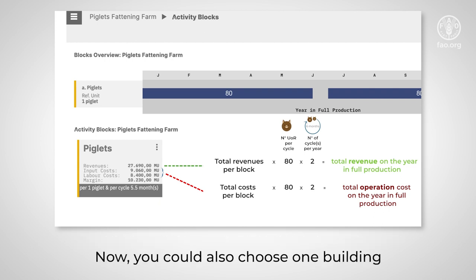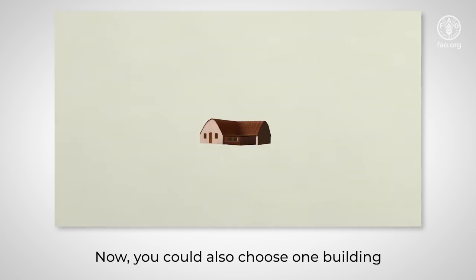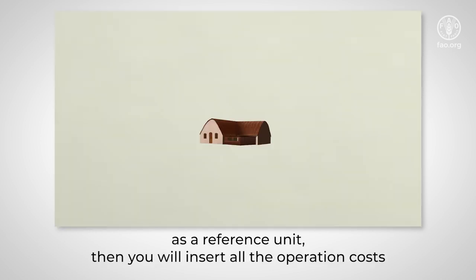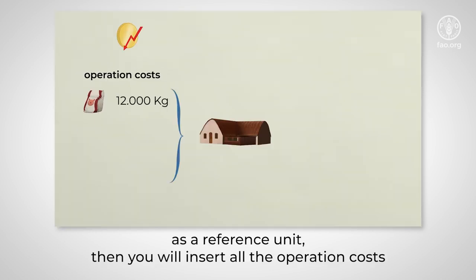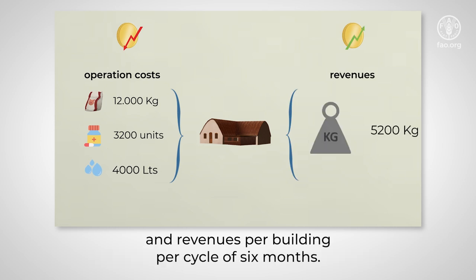You could also choose one building as a reference unit. Then you will insert all the operation costs and revenues per building per cycle of six months.